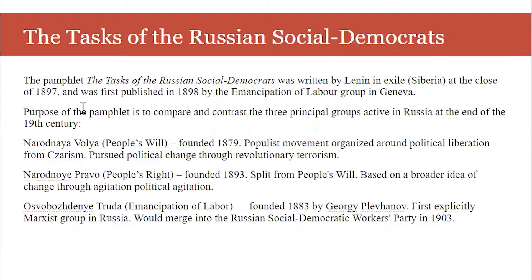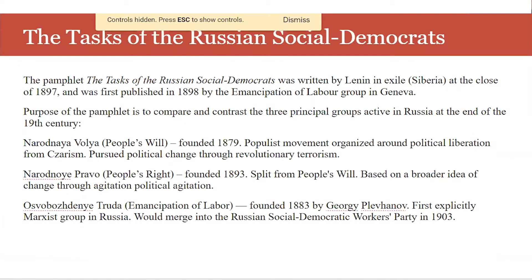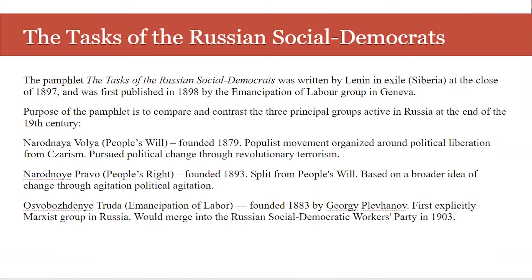This pamphlet, 'The Task of the Russian Social Democrats,' was written by Lenin in exile in Serbia at the close of 1897. It was first published in 1898 by the Emancipation of Labour Group in Geneva. The purpose of the pamphlet is to compare and contrast the three principal groups active in Russia at the end of the 19th century.